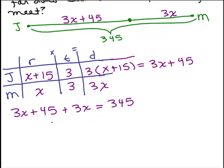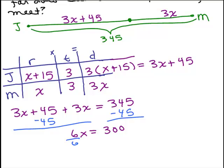All right, so I'm going to add the like terms and at the same time, subtract 45 from both sides. So we have the variables on the left. We've got 6x equals 300. And dividing both sides by 6, we get x equals 50.